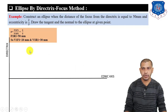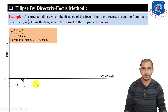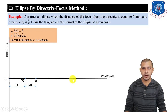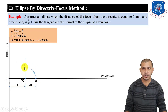After drawing the directrix and conic axis, mark point R1 on the directrix. From R1, mark vertex V1 at 30 mm, and from V1, mark focus F1 at 20 mm. Then draw a line perpendicular to the conic axis from the vertex point V1. Measure V1F1 on the compass, give an arc on this perpendicular line, and mark the intersection point as Q1. Connect Q1 to R1. This angle will be less than 45 degrees.